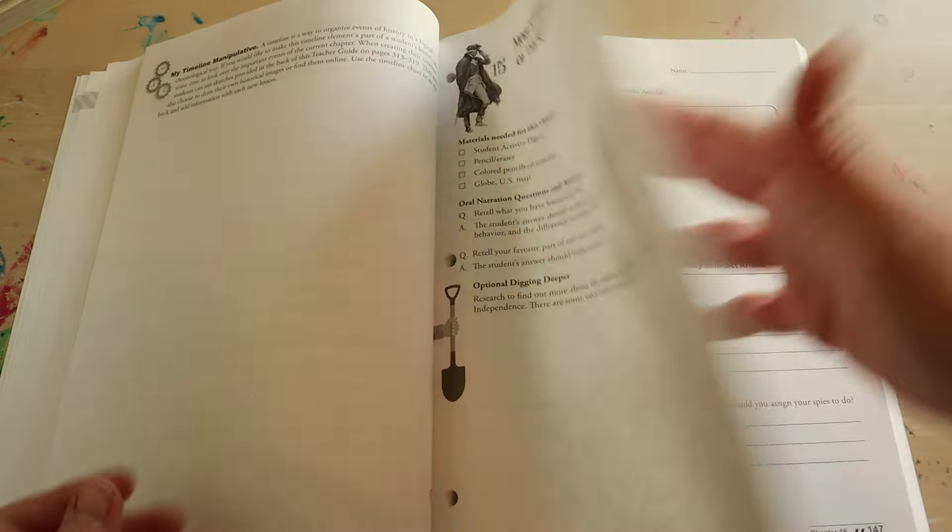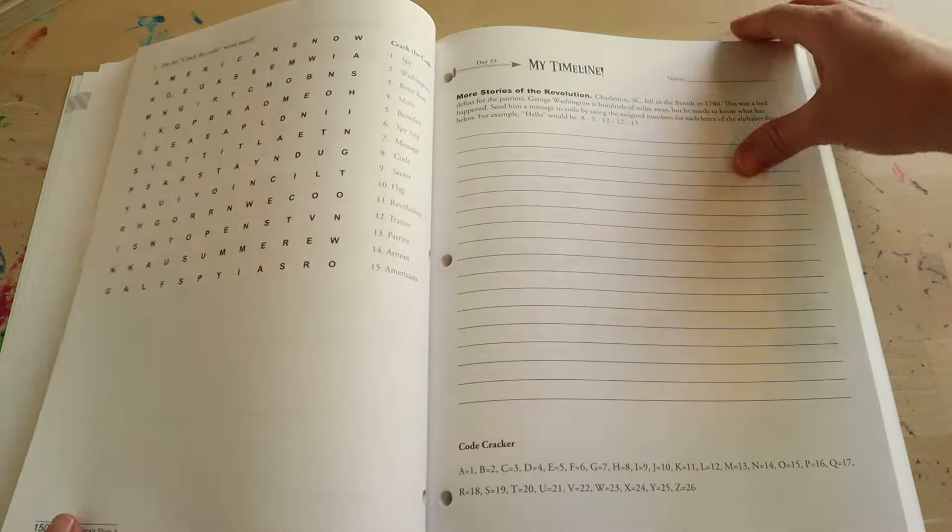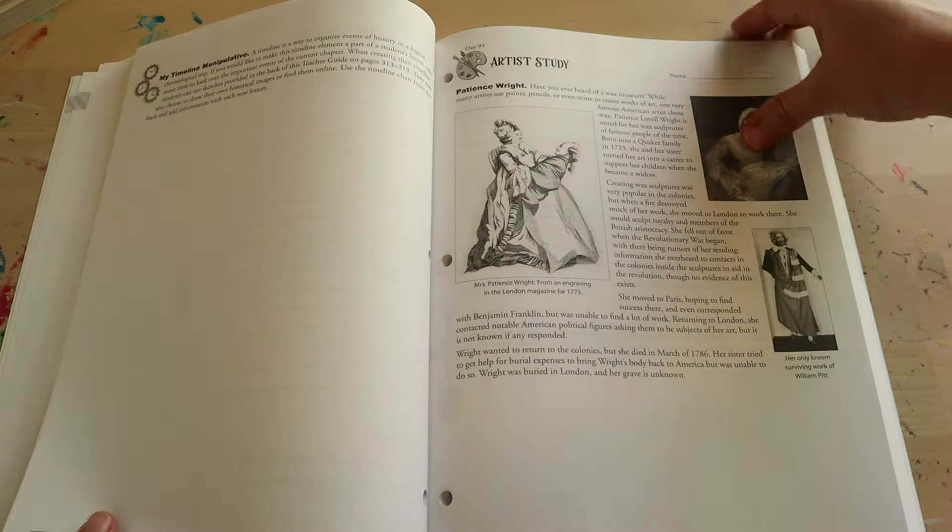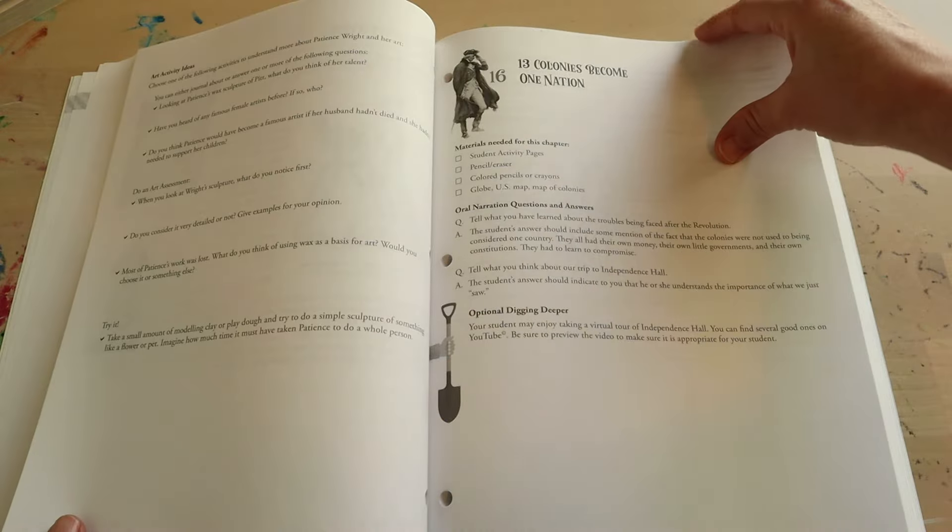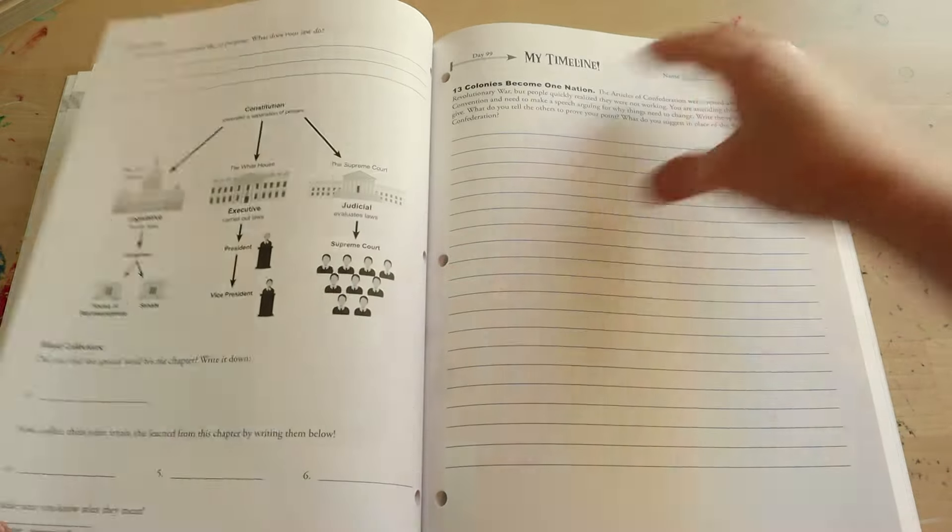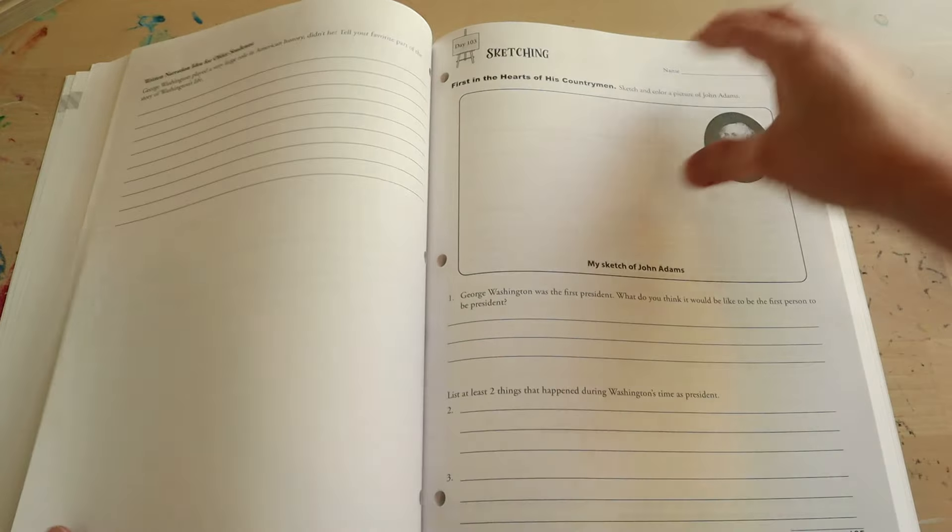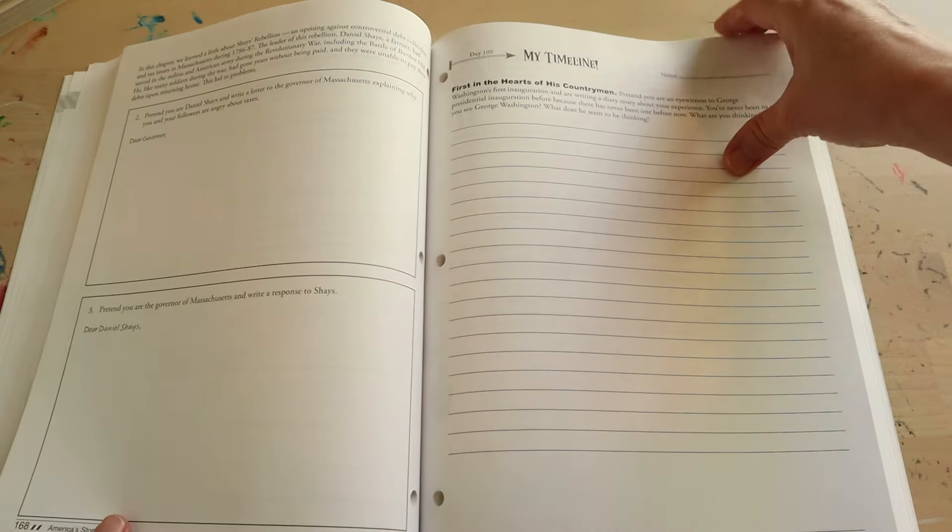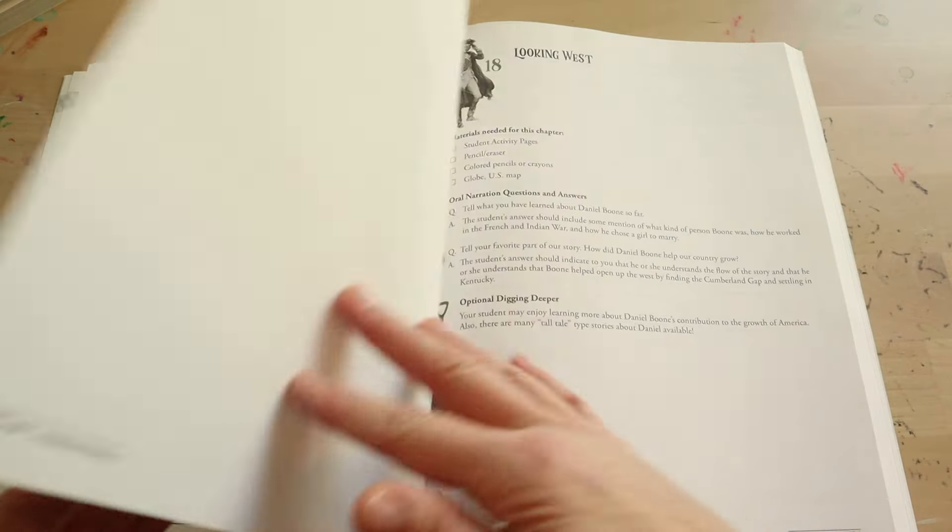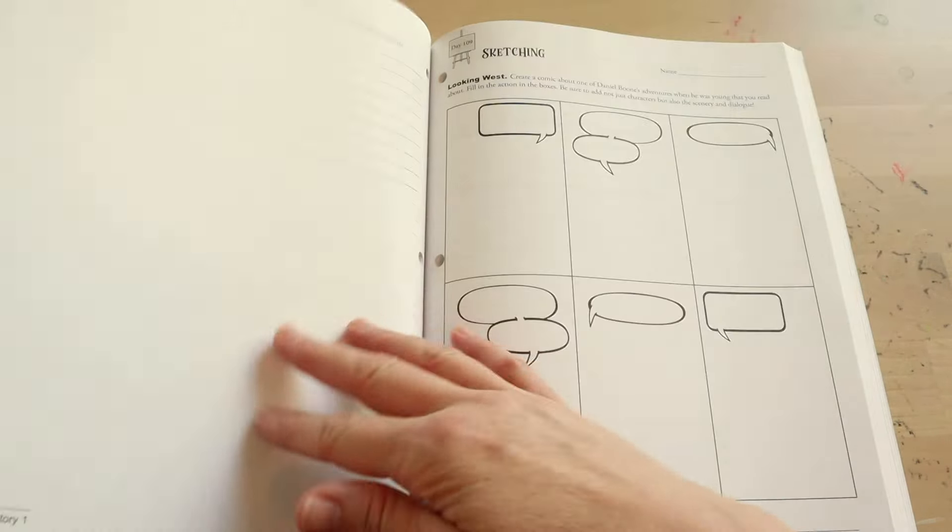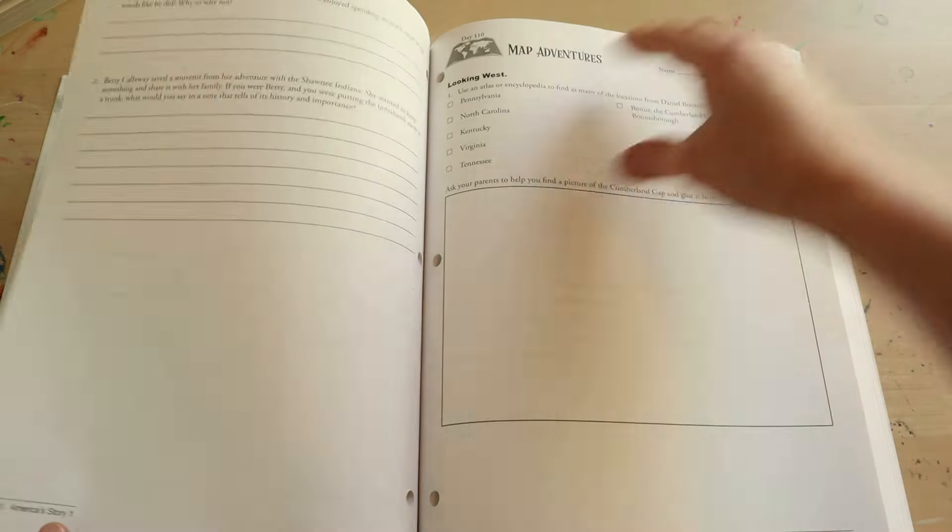Then on day four, they will be doing some map exercises by labeling different places, finding different countries on a globe, creating their own map, and they will be finding some special words within the chapter and then looking up their meanings. Their final assignment for every week will be working on their timeline and answering a question about the period that they just learned about.